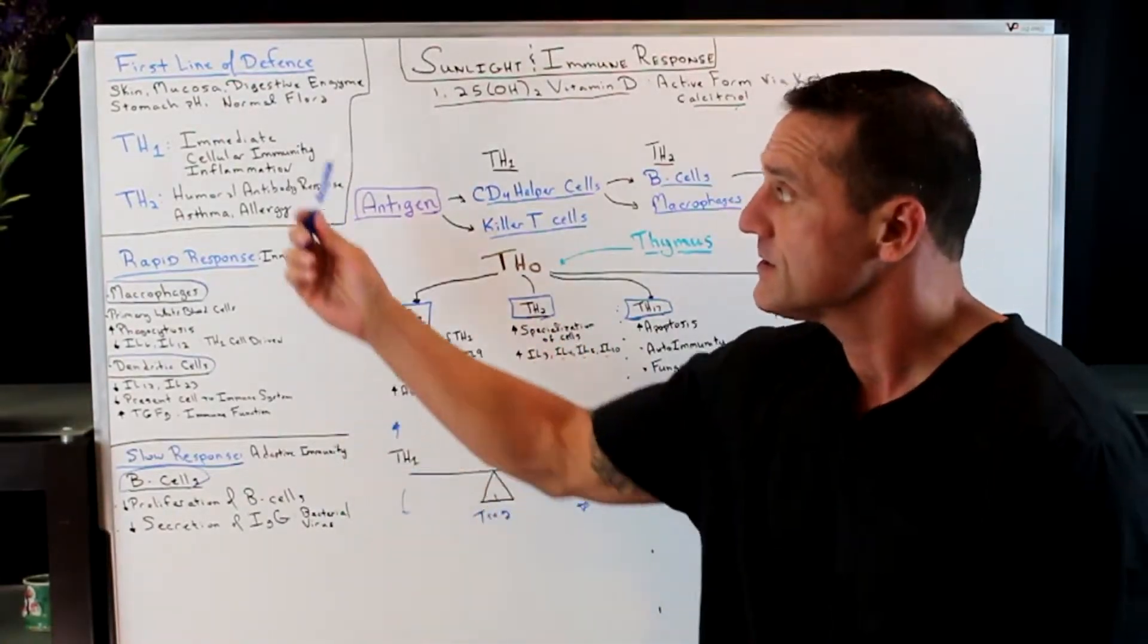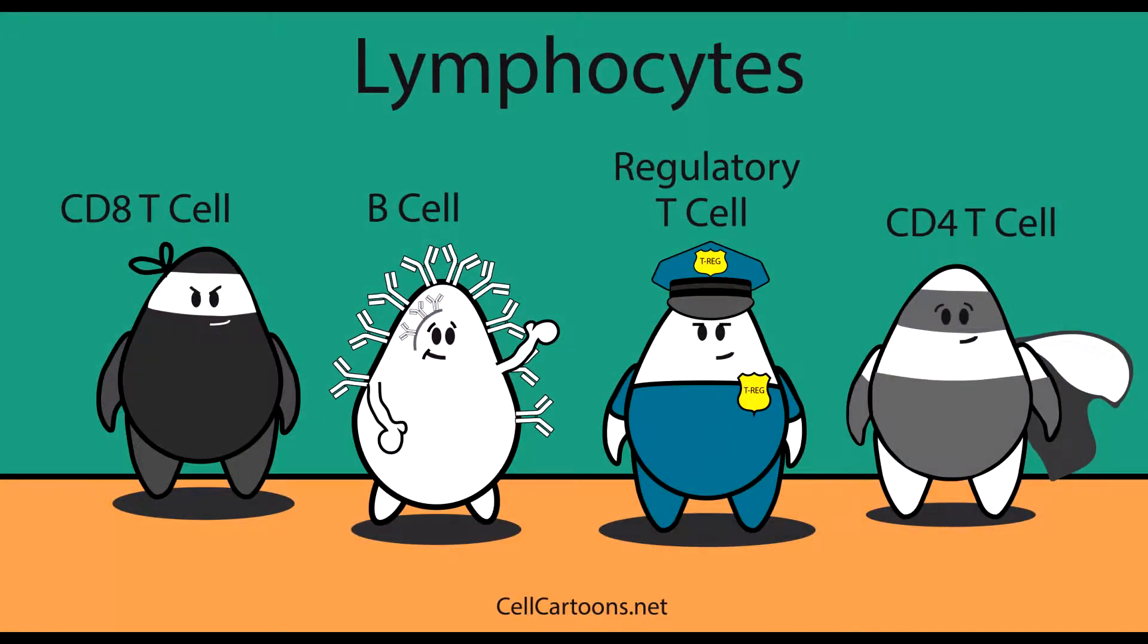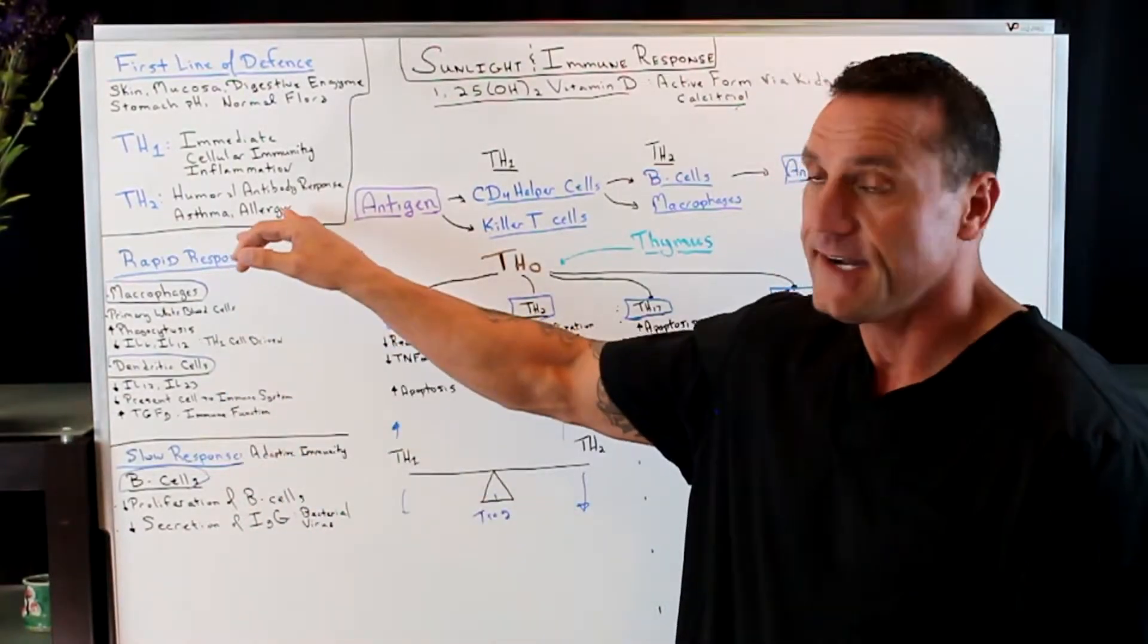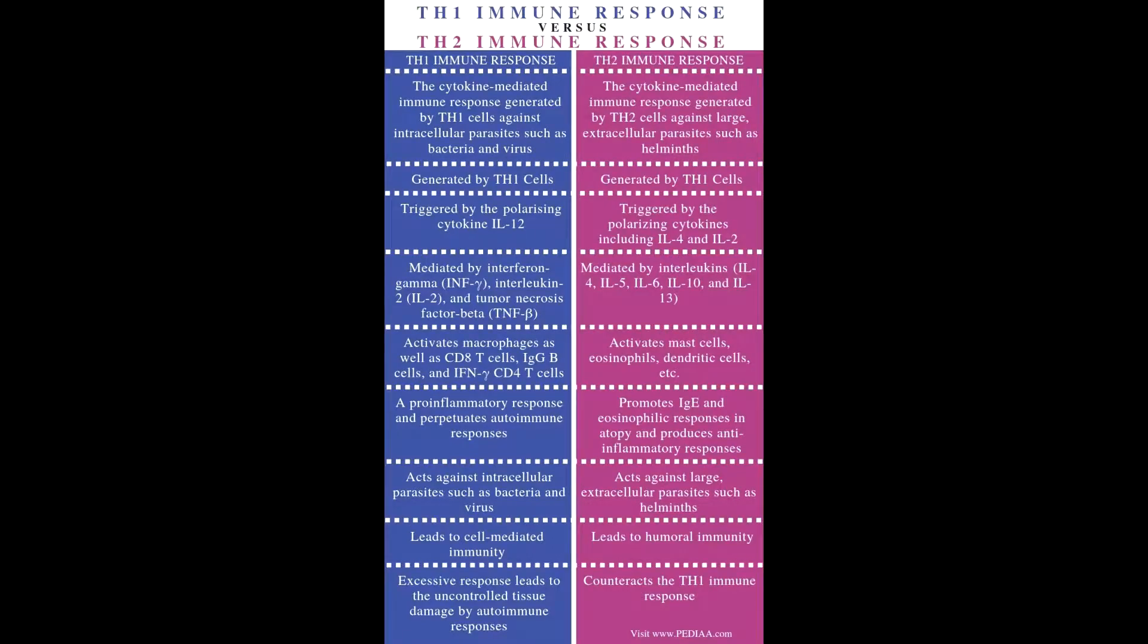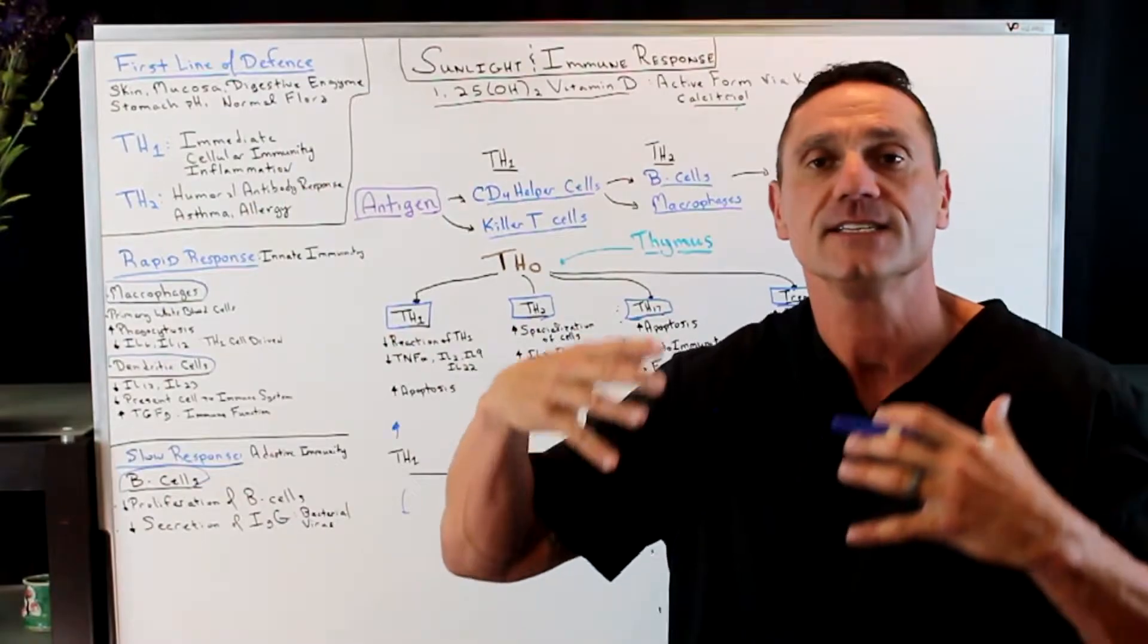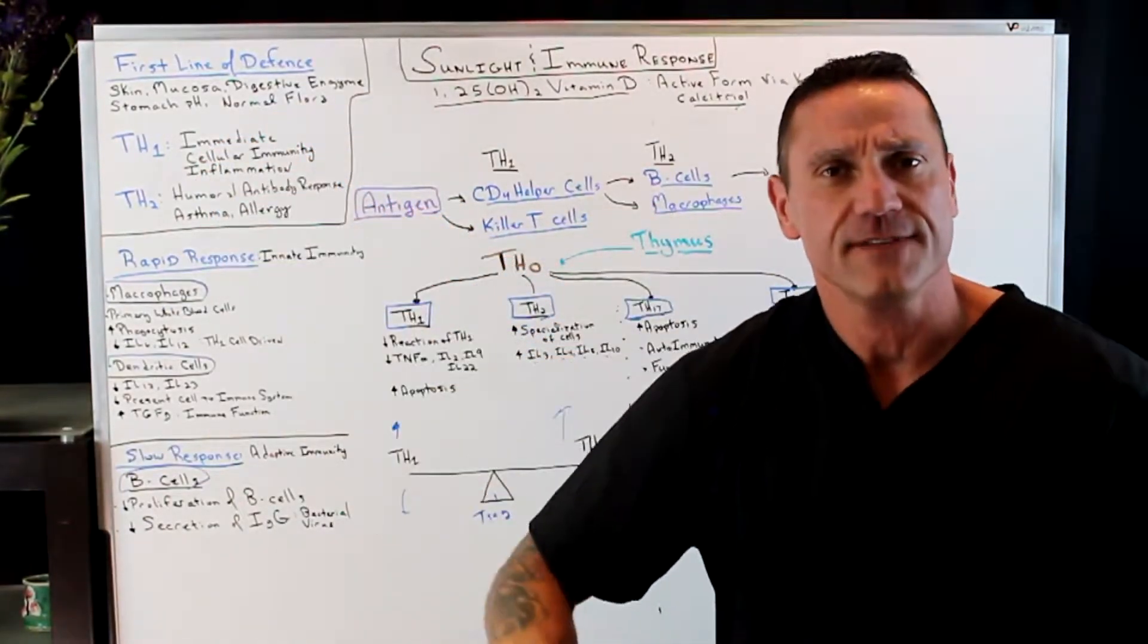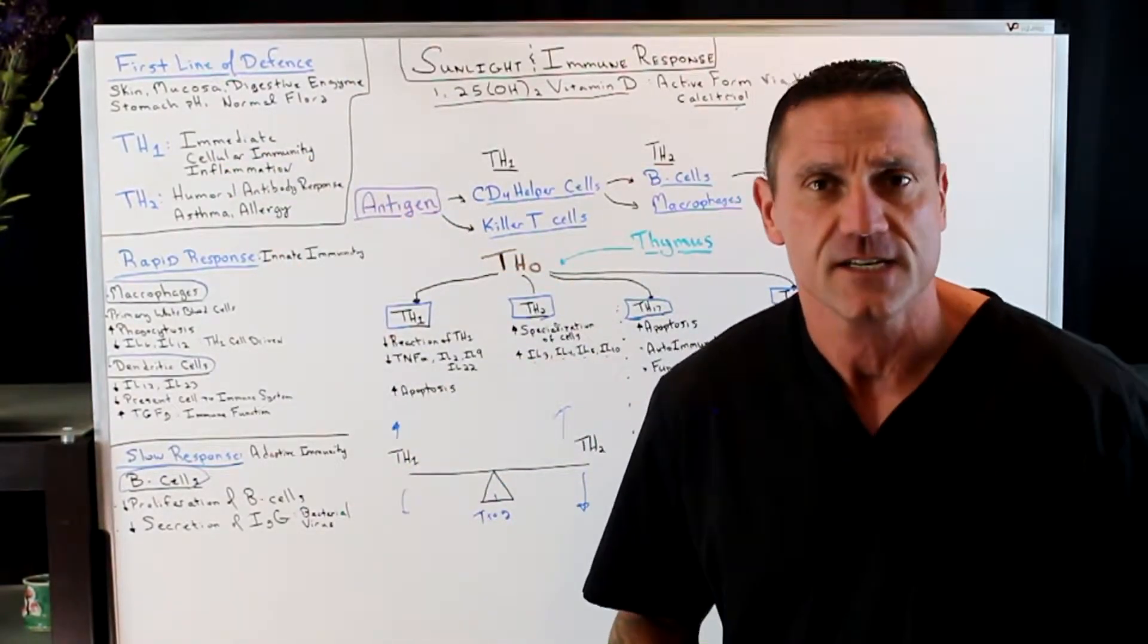There's two types of defense on the immune system. There's one, it's your immediate response, your TH1 response. This is the first responders. And then we have the delayed response, which is the TH2 response, a little bit more delayed. And this is where the antibodies are made. So the first line of defense that we have is our skin, the mucosal membranes, the digestive enzymes in our gut, our stomach pH, the normal flora throughout the digestive system.